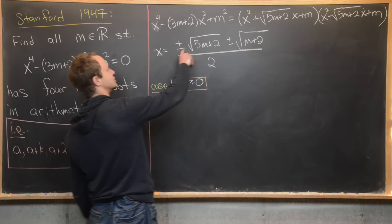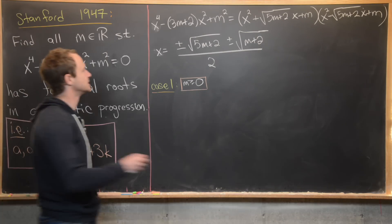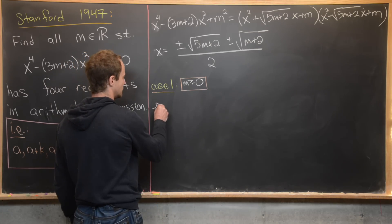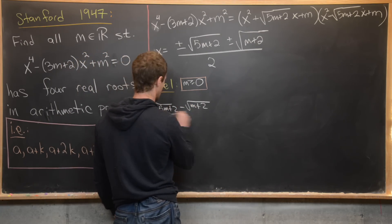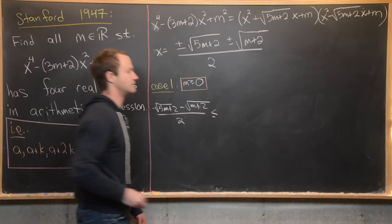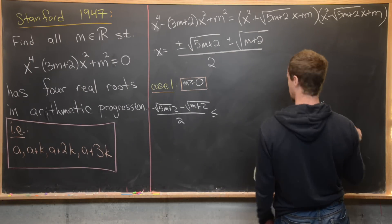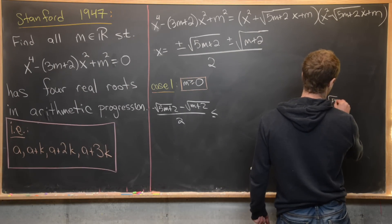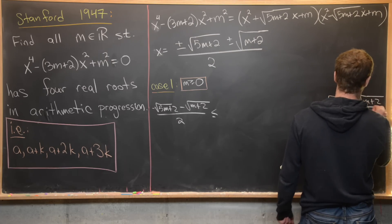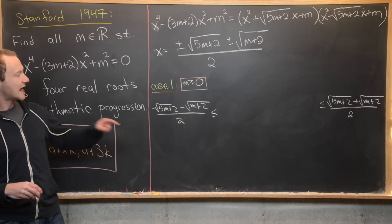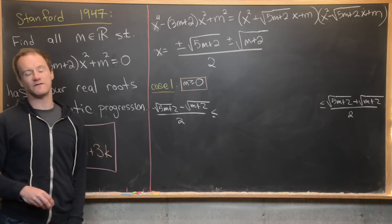The smallest root has two minus signs: (−√(5m+2) − √(m+2)) / 2. The largest root has two plus signs: (√(5m+2) + √(m+2)) / 2. Then we need to determine the order of the two middle roots.